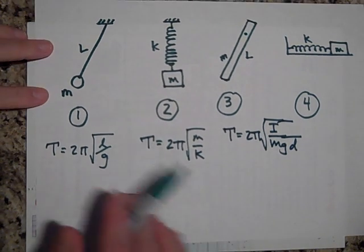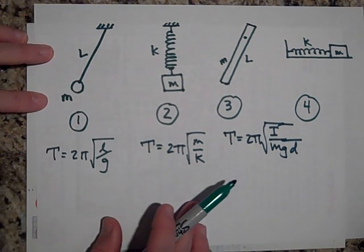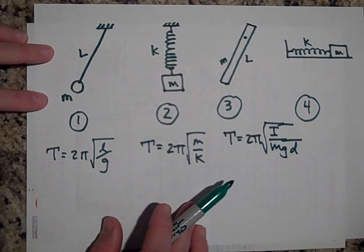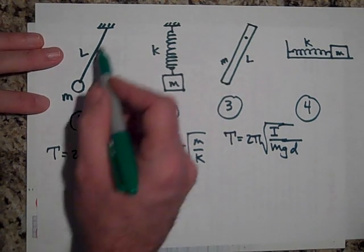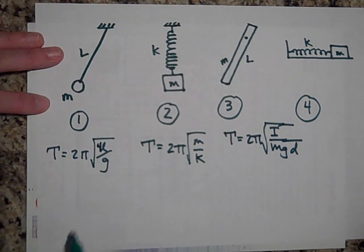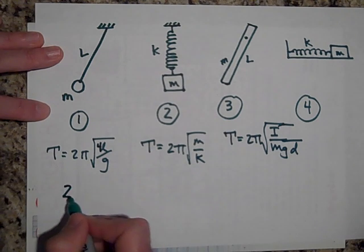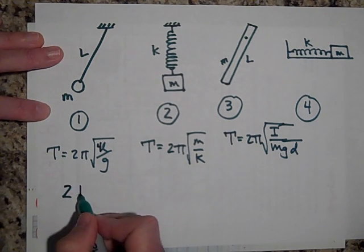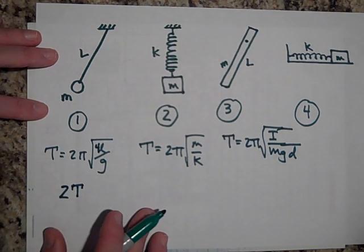If I quadruple the length of the simple pendulum's string, what does that do to the period? If I quadruple the length, that's like putting a 4 inside the square root, which makes the period twice as large. If the original period was T, it's going to become 2T — it doubles.